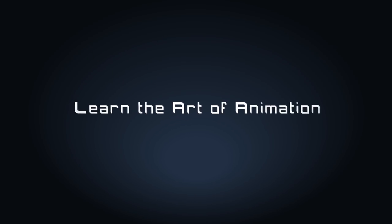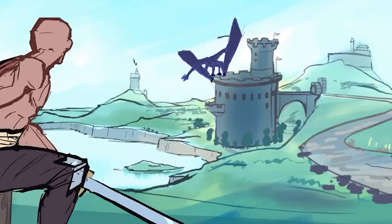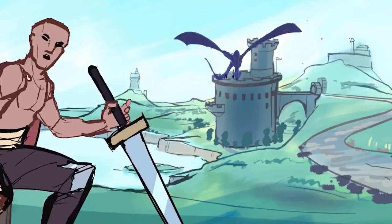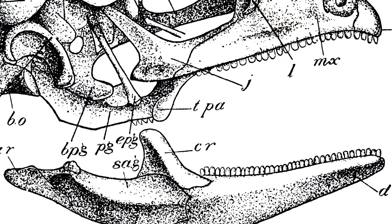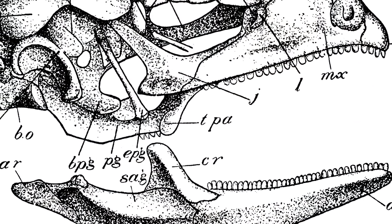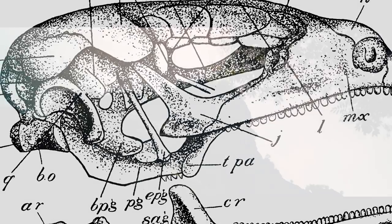Dragons are really difficult to animate. It's among the harder things to animate. Just be warned — it's even hard to just draw a dragon, let alone animate one. For one thing, there's no real reference of them other than in animals, so you have to adapt things that are in animals. And the other thing is they just have complicated anatomy a lot of the time.